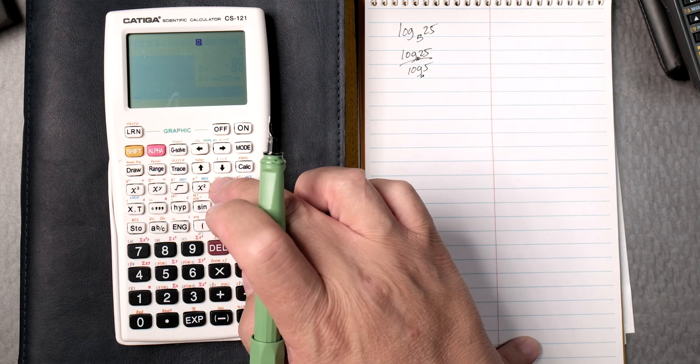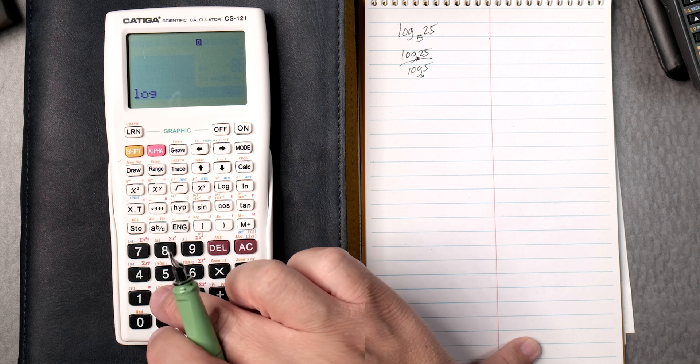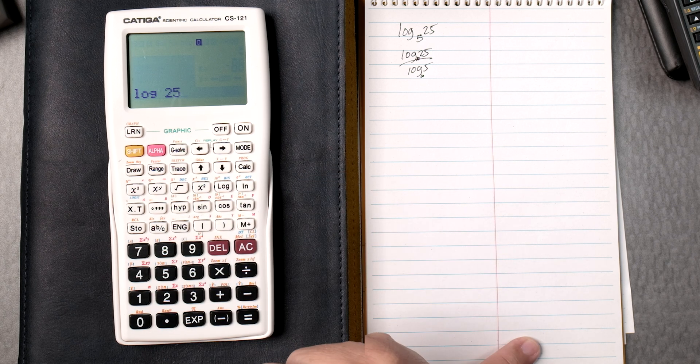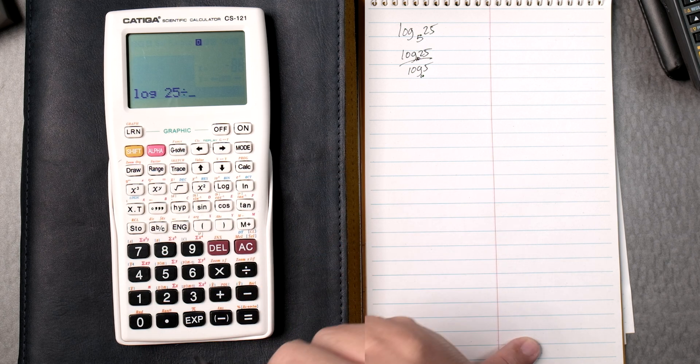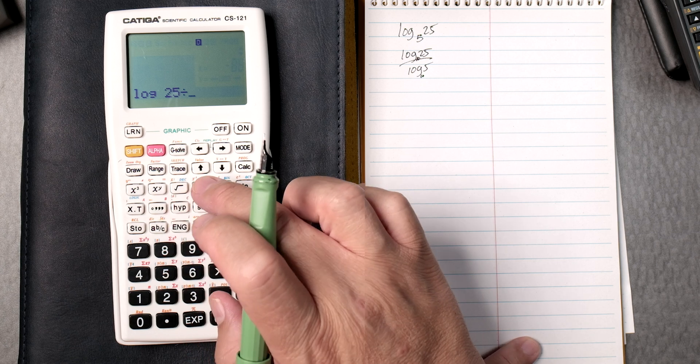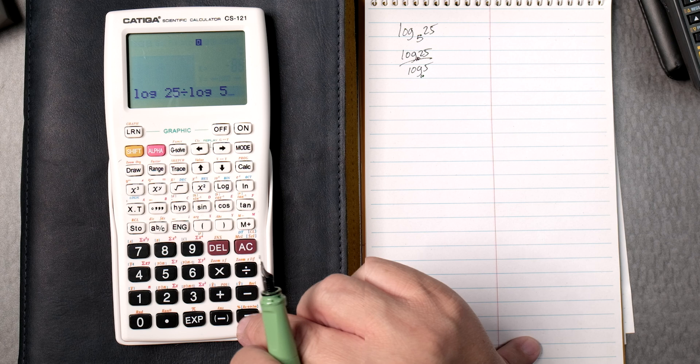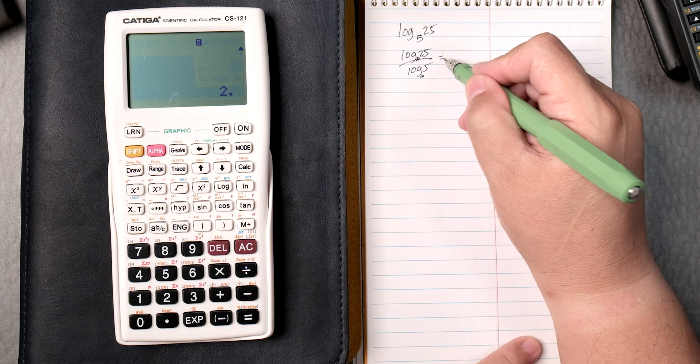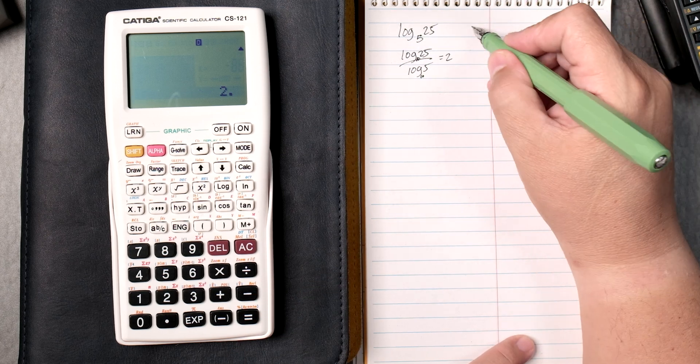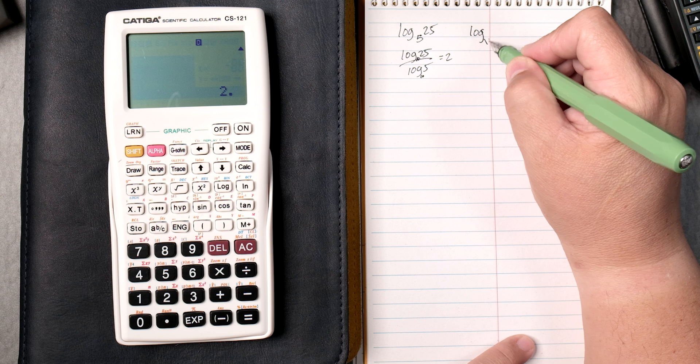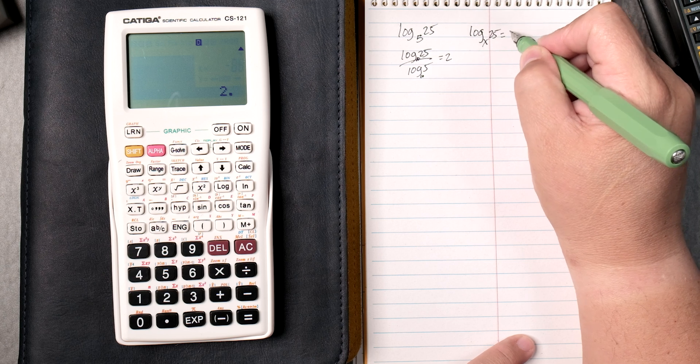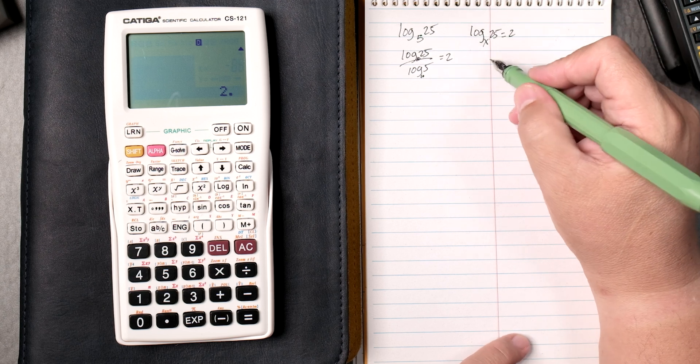So we click on log 25, and in this case we can say divide, then the log again, and we do 5 and we press equals. That gives you 2.